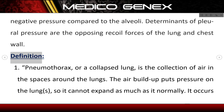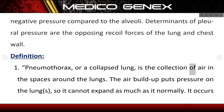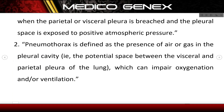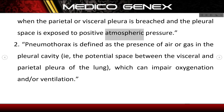Definition. Pneumothorax, or a collapsed lung, is the collection of air in the spaces around the lungs. The air buildup puts pressure on the lung so it cannot expand as much as it normally does. It occurs when the parietal or visceral pleura is breached and the pleural space is exposed to positive atmospheric pressure.